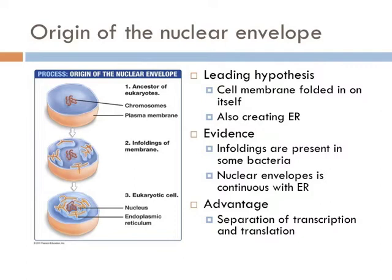Two lines of evidence support this hypothesis. First, infoldings of the plasma membrane occur in some bacteria today. Second, the nuclear envelope and ER of contemporary eukaryotes are continuous. It is thought that the major advantage of the development of the nucleus was the separation of translation and transcription. In bacteria, translation and transcription can occur simultaneously. In eukaryotes, they developed a specific way to differentiate gene expression so genes can be turned on and off, allowing specific genes to be expressed at a time instead of the entire genome.